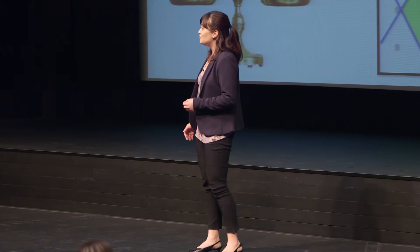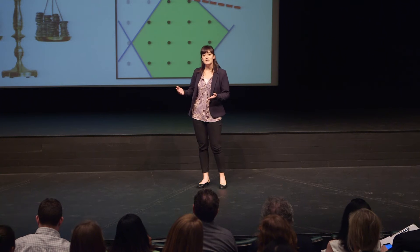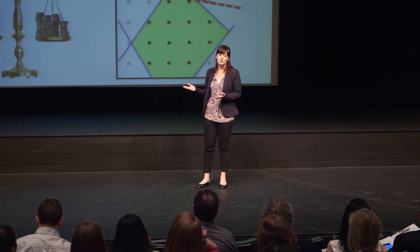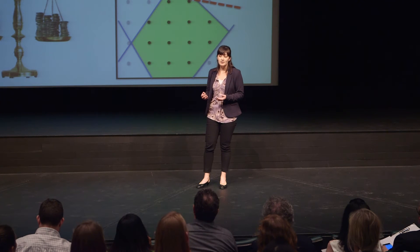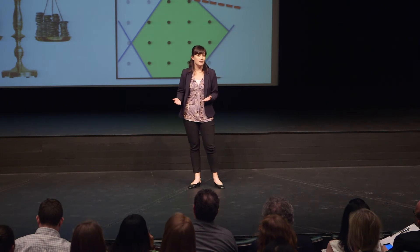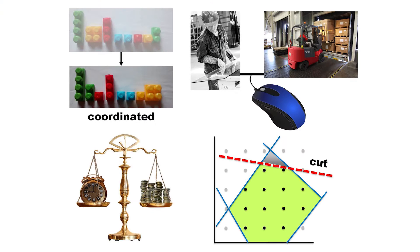Now, picture that on a larger scale. Instead of buying groceries, I manufacture thousands of items on a machine. And instead of parking, I spend time adjusting this machine when I change production over from, say, an item that's red to an item that's blue. Now, I could just produce in an ad hoc manner, or I could observe that by coordinating production by color, I spend less time setting up and have more time to produce.